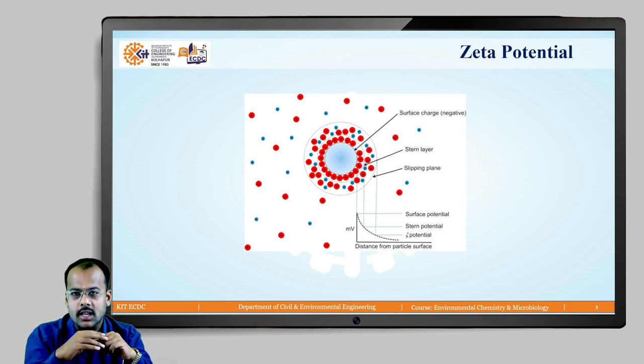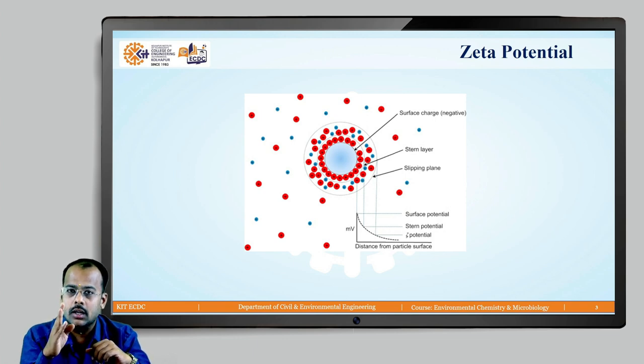At the bottom, you can see if you take a graph of distance from the surface on x-axis to the charge on the particle, the surface potential has a very high charge. As you are going to the stern potential, the charge goes on reducing. And as you are going to the slipping plane, also the charge is reducing.